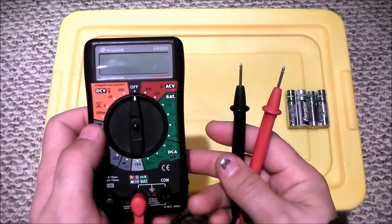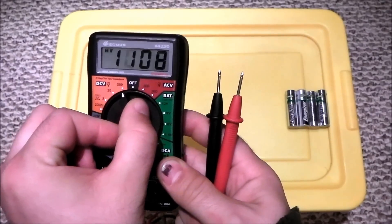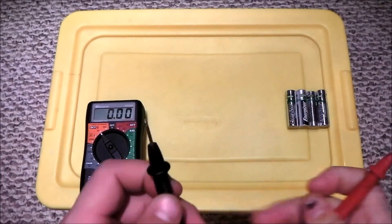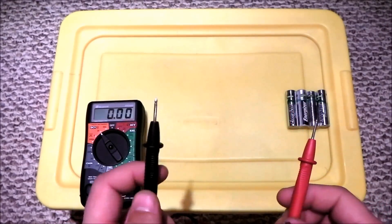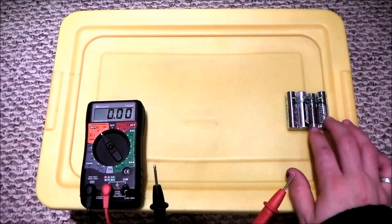So what you want to do is turn your multimeter to the DCV setting of 20, and you got your negative black lead, positive red lead, and here I have four double-A rechargeable batteries.